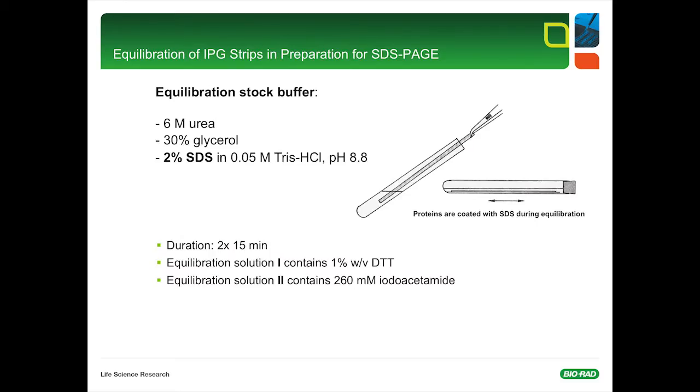After the run, we do an equilibration step with the IPG strips. The purpose of this equilibration step is to coat the proteins with SDS in order to transfer the proteins from the IPG strip into the SDS gel. Usually, the equilibration stock buffer consists of urea, glycerol, and 2% SDS in a Tris buffer. Duration of equilibration is 2 times 10 to 15 minutes. Equilibration solution 1 contains DTT, and equilibration solution 2 contains iodoacetamide. We're doing a reducing and alkylation step in two-dimensional electrophoresis.